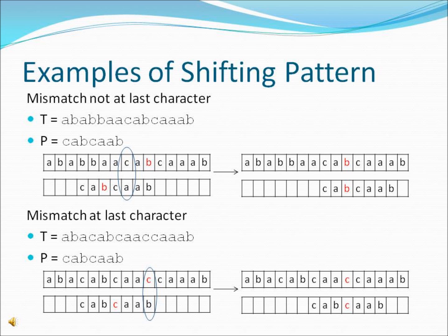The other type of mismatch is when the last character of the pattern doesn't match its corresponding character in T. This case is very similar. The only difference is that we find the rightmost occurrence of the character which doesn't match the pattern in the text string, in this case C, and then we shift accordingly.